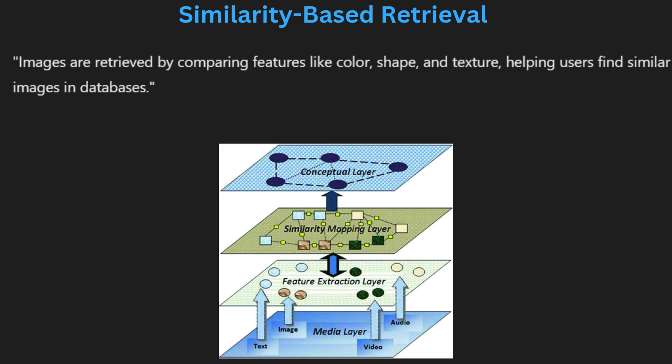Similarity-based image retrieval helps to find images that are visually similar to a given example. In multimedia systems, images are compared based on features like color distribution, shapes or texture patterns. For instance, searching for images of flowers retrieves similar images based on colors and shapes of petals. This method is used in various applications from online image searches to medical diagnostics. It enhances user experience by providing results that are visually close to the query image, helping users find what they need more efficiently.